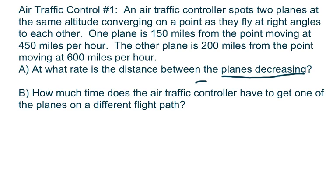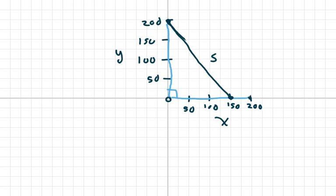So our answer is going to be negative. How much time does the air traffic controller have to get one of the planes on a different flight plan? I kind of drew a simple picture here. The first thing I'm going to do is use the Pythagorean theorem and find what S is.